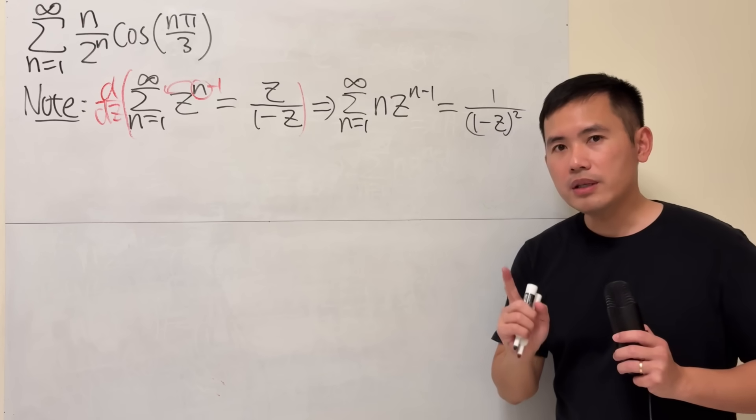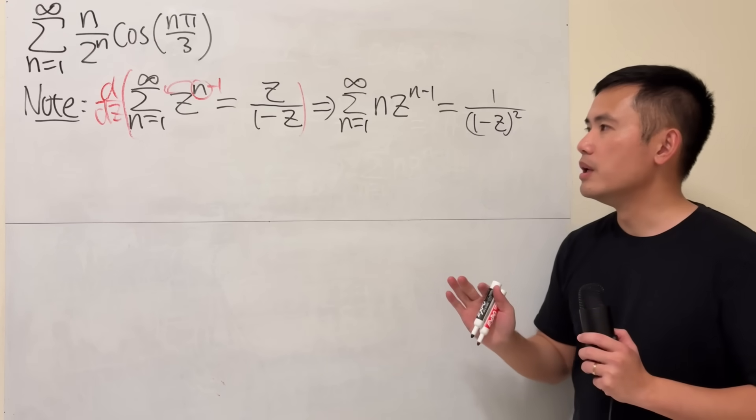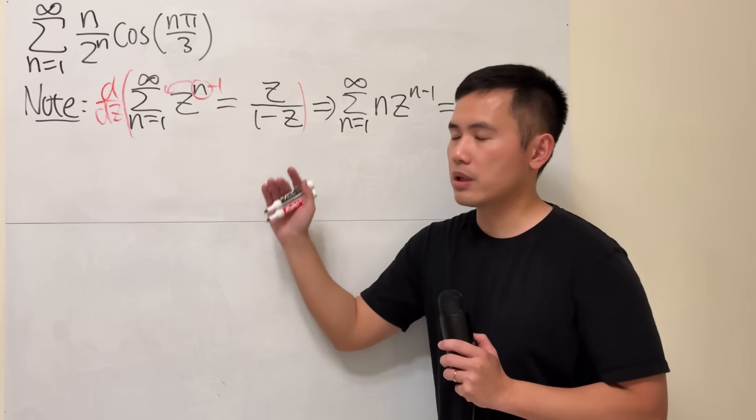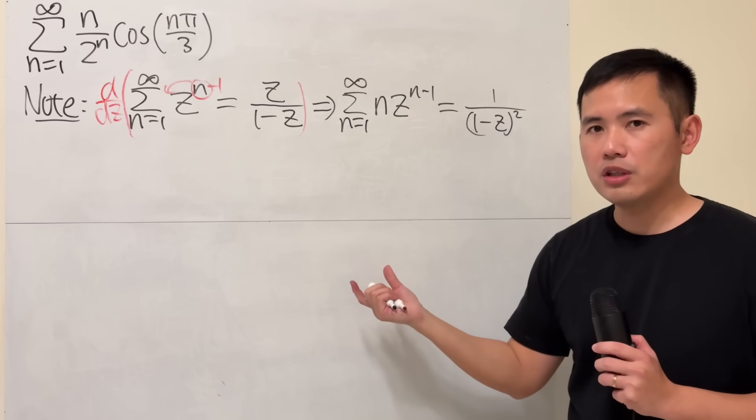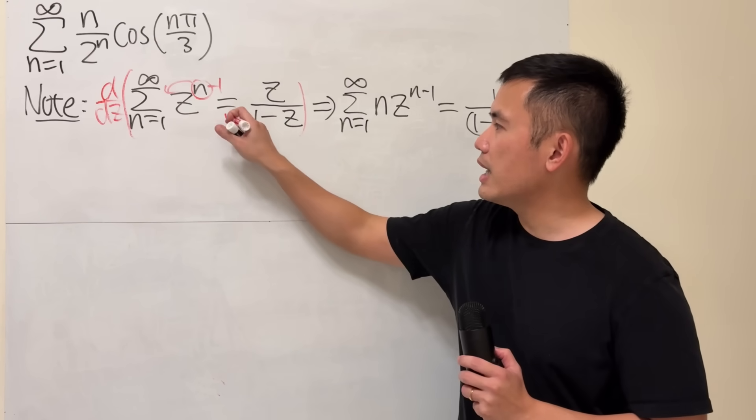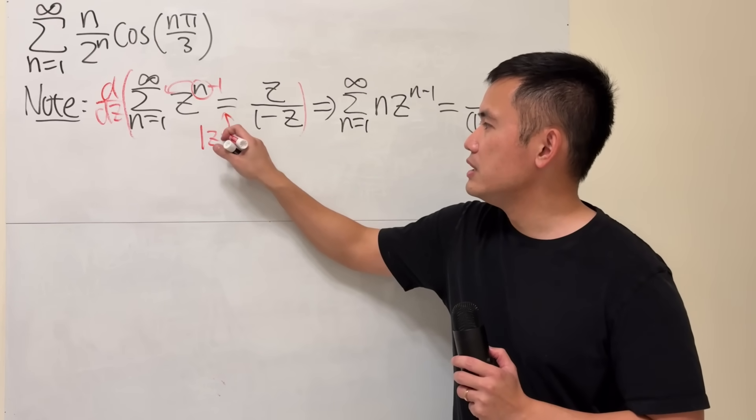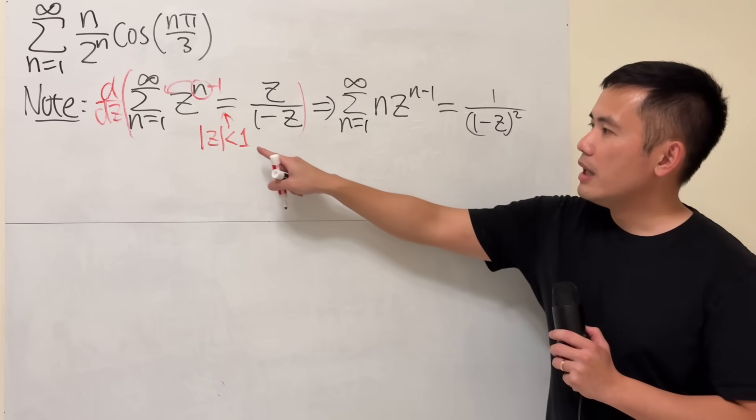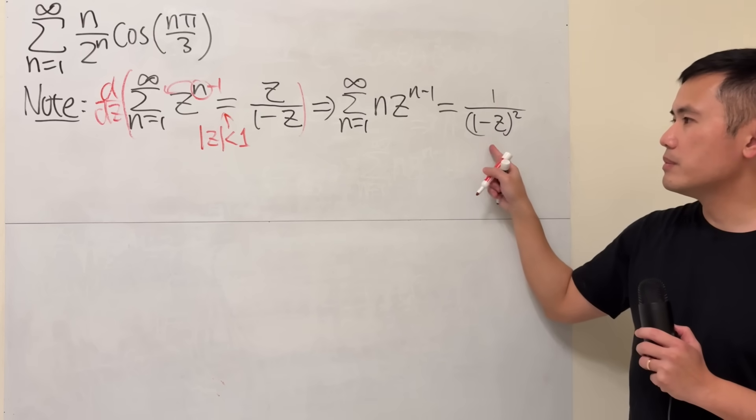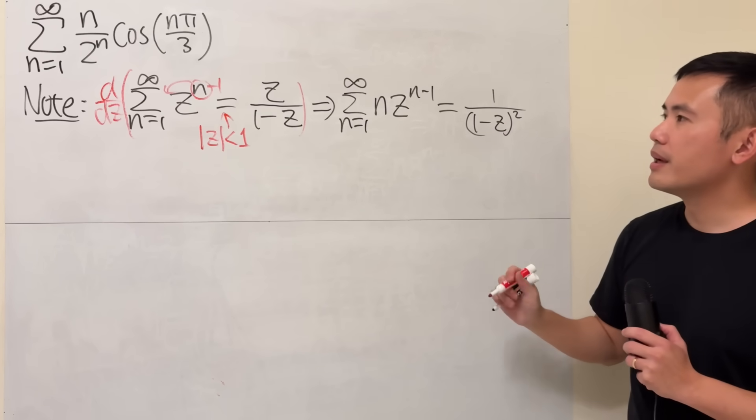Now, there's one condition we have to be careful about. In order for this to converge, in order for this to be legitimate, the condition is that absolute value of z has to be less than 1, so keep that in mind. We have the same condition here.